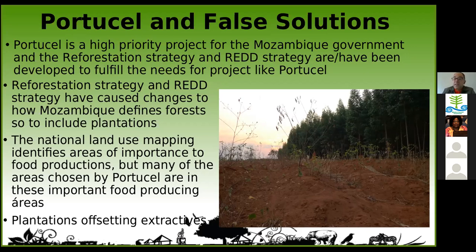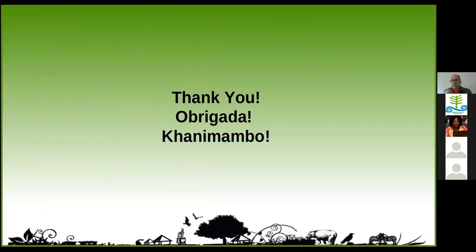Mozambique did a land mapping that identified critical areas of food production to guarantee food sovereignty, and PortCell actually chose many of those areas. District and provincial level government officials raised concerns, but they were overridden at the national level. The extractive industry — especially gas companies like ENI and Total — is using offsets from these initiatives to continue fossil fuel extraction, making it critical that these projects go forward to meet their so-called plans. So it is strongly linked to the gas industry and to conflict.